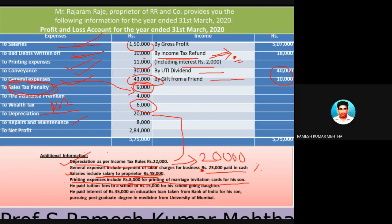Tuition fees of fifteen thousand rupees paid for his school-going daughter is personal in nature and not allowed. Interest of forty-five thousand paid on education loan taken for his son's higher education is also personal expenditure in nature. So eight thousand, fifteen thousand, and forty-five thousand are all personal expenditures not allowed on the debit side of profit and loss account.